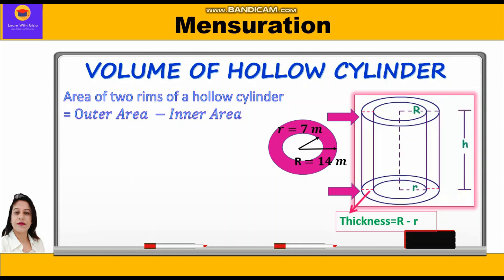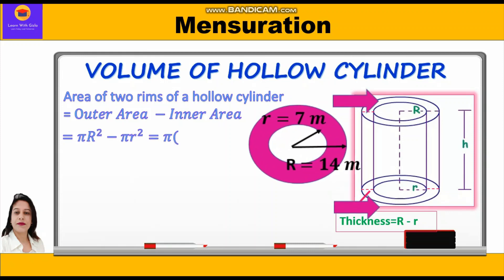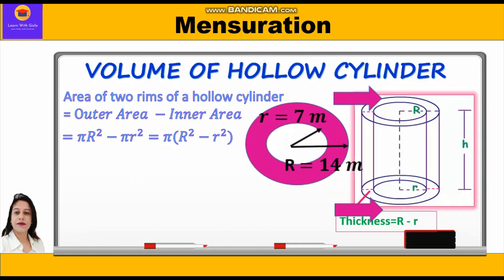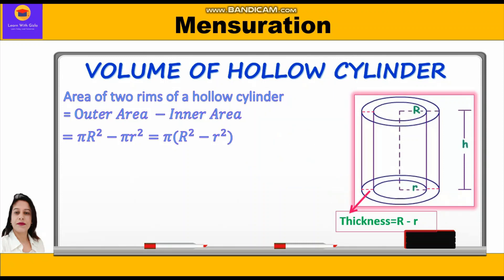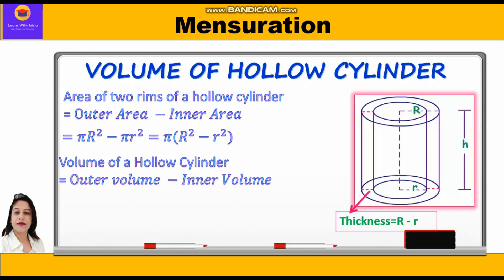Since both rims are circular, the area is πR² − πr², and taking π common we get π(R² − r²). The volume of the hollow cylinder — also called the volume of metal used in a pipe or tube — is given by the outer volume minus the inner volume: πR²h − πr²h. Taking πh common, we get πh(R² − r²).